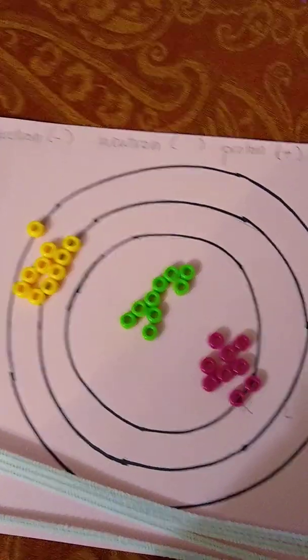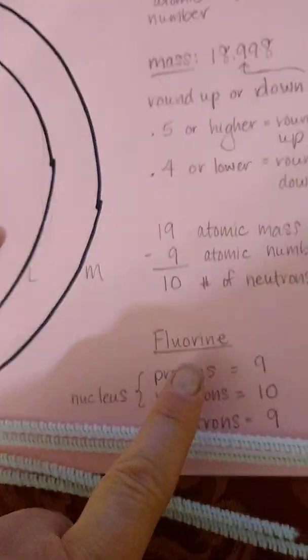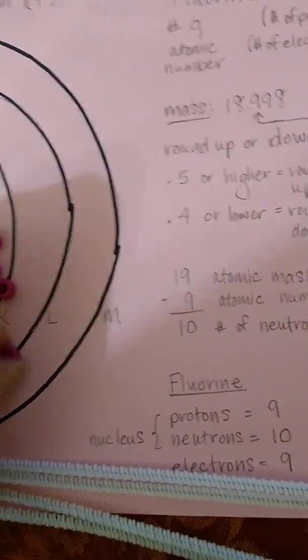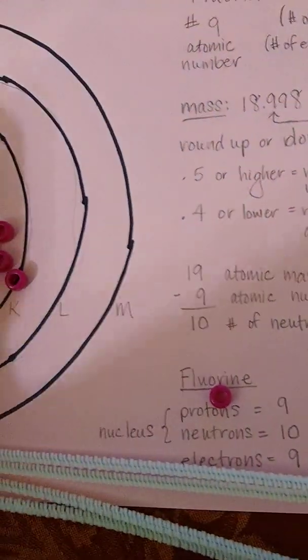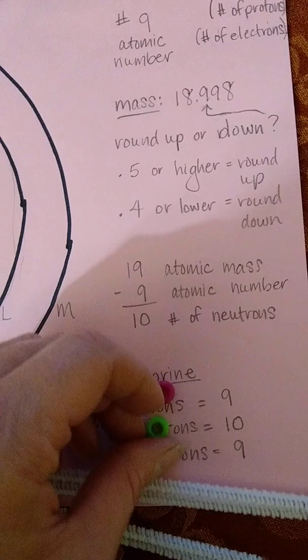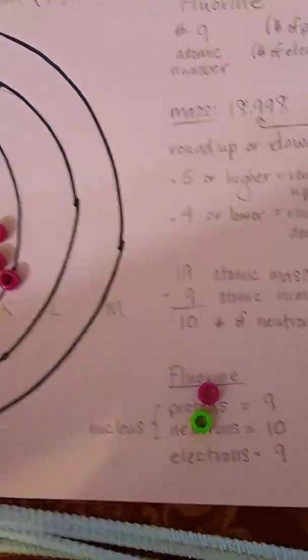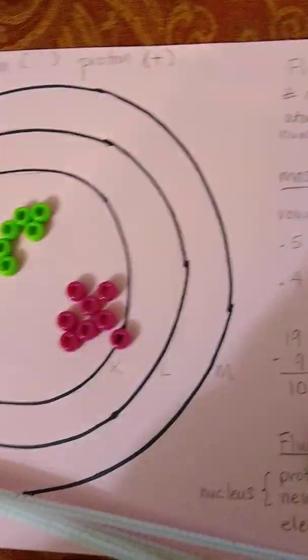First, let's start with our nucleus. We're going to put nine protons using pink beads, ten neutrons using green, and for my electrons we'll use yellow. So let's get started with the nucleus.